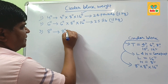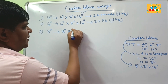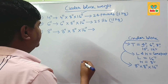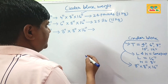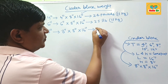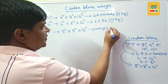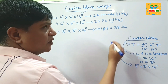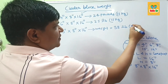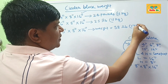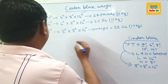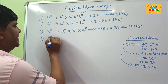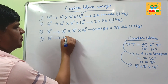The next block is the 8-inch thick cinder block. It is 8 inches thick, 8 inches in height, and 16 inches long. This block weighs around 38 pounds. If you convert this figure to kilograms, it is about 17 kg.